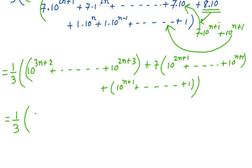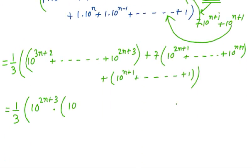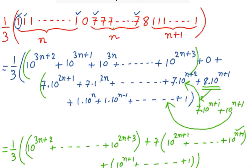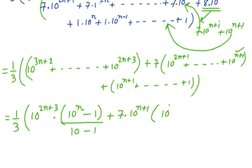Using the GP sum formula, taking the smallest term as the first term with common ratio 10: the first GP gives 10^(2n+3) × (10^n − 1) / (10 − 1). The second GP: first term is 10^(n+1), common ratio 10, and since the 8 was split to add one more 7, there are n plus 1 terms, giving 7 × 10^(n+1) × (10^(n+1) − 1) / 9.